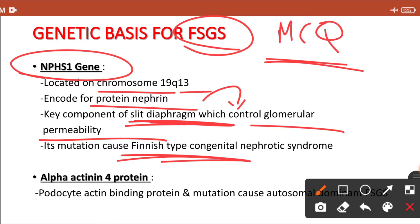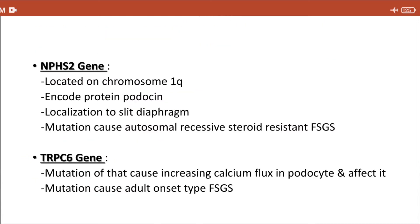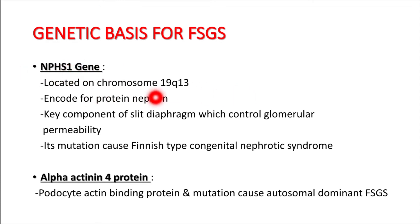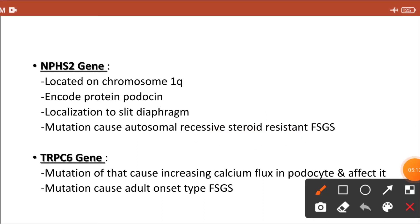The second gene associated with FSGS is alpha-actinin-4, a podocyte actin-binding protein whose mutation causes an autosomal dominant variety of FSGS. The third important gene is NPHS2, located on chromosome number 1, long arm. It encodes the protein podocin, which is also located in the slit diaphragm. Its mutation causes an autosomal recessive type of FSGS that is resistant to steroids.